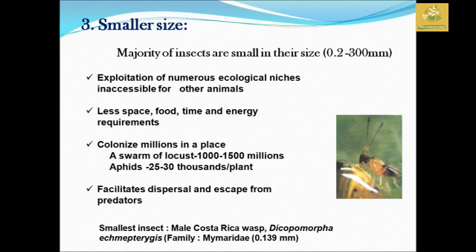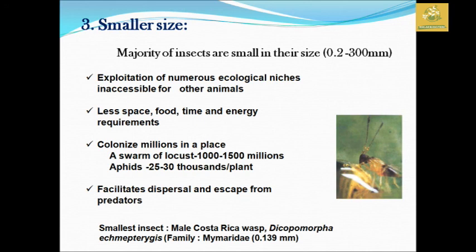This is the smallest insect. It is 0.139 mm. This is the male Casta ricagas — Dicocomorpha echmepterygis. The size is 0.139 mm. This is the smallest insect known.